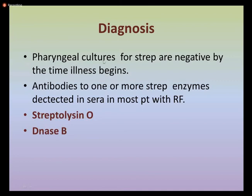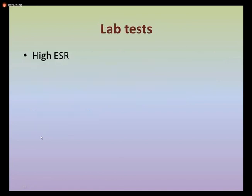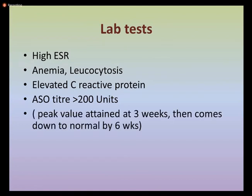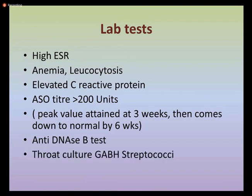It should be kept in mind that differential cultures of strep are often negative by the time illness begins. Antibodies to one or more strep enzymes — streptolysin O or DNase-B — can be detected in most patients. Other lab findings include high ESR (around 200 units, peaking at three weeks and returning to normal by six weeks), anemia, leukocytosis, elevated C-reactive protein, and anti-DNA antibodies. Throat culture against group A beta-hemolytic streptococci may be positive.